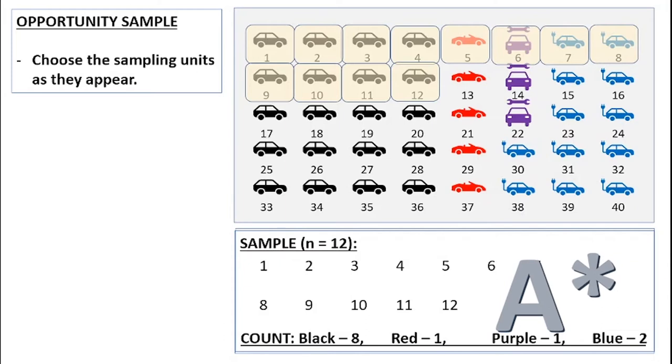You might be able to spot some issues here. If I take account of what I have, I have eight black cars, one red, one purple, and two blue, and that in no way represents the proportions that we had in the population to begin with.